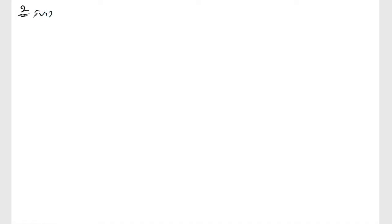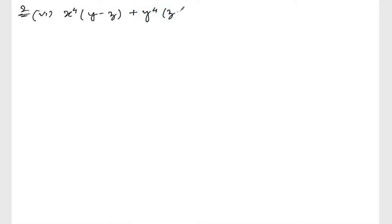Now we are doing exercise 3.1, question number 1, row question number 2, row number 6. Let me write down the question. The question is x to the power 4 times (y minus z), plus y to the power 4 times (z minus x), plus z to the power 4 times (x minus y).